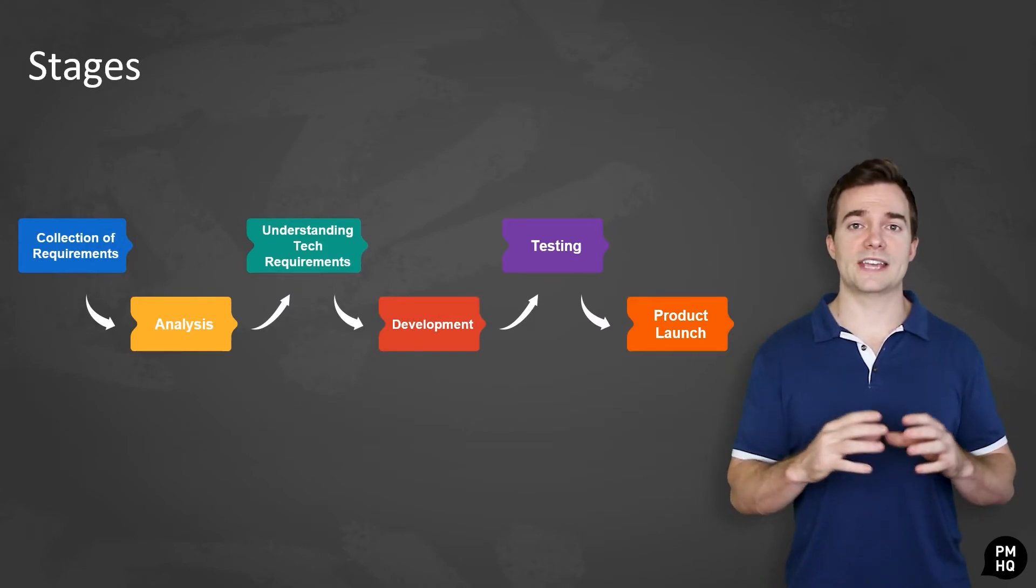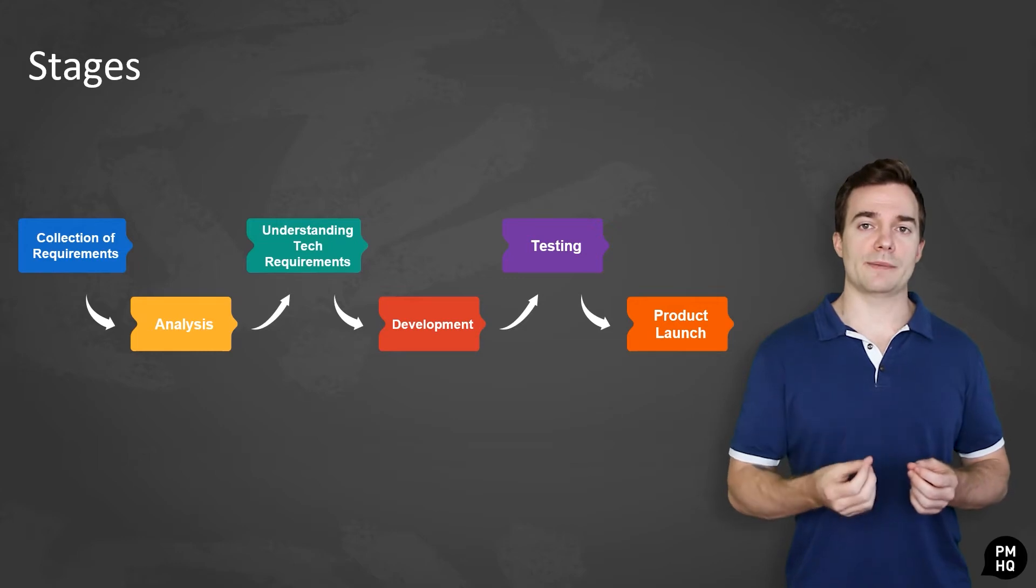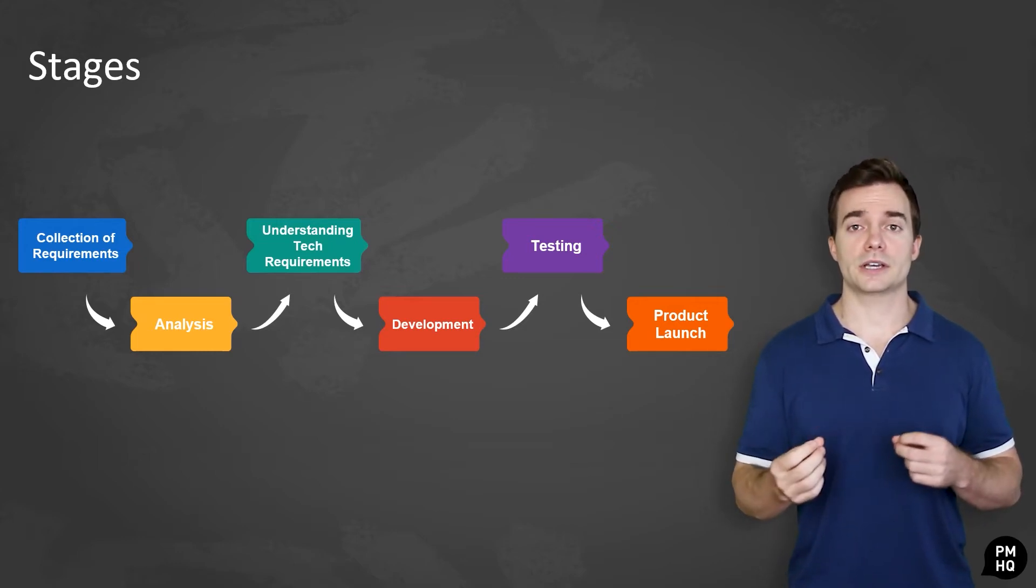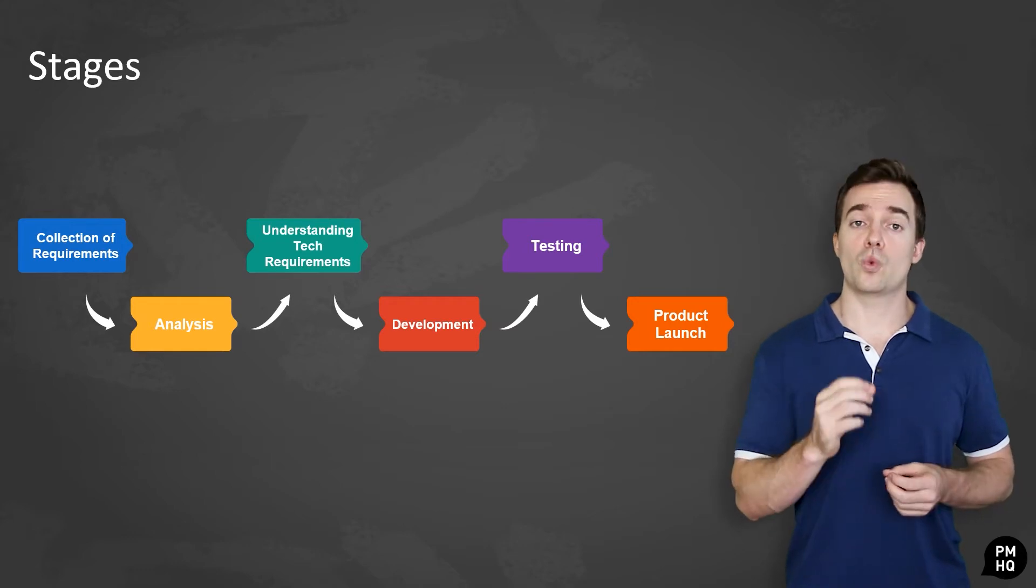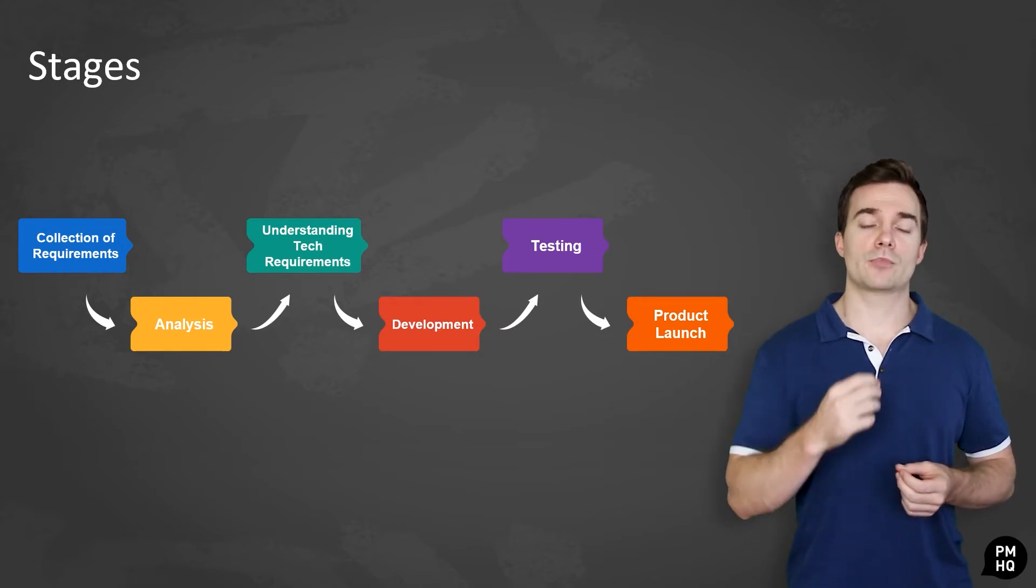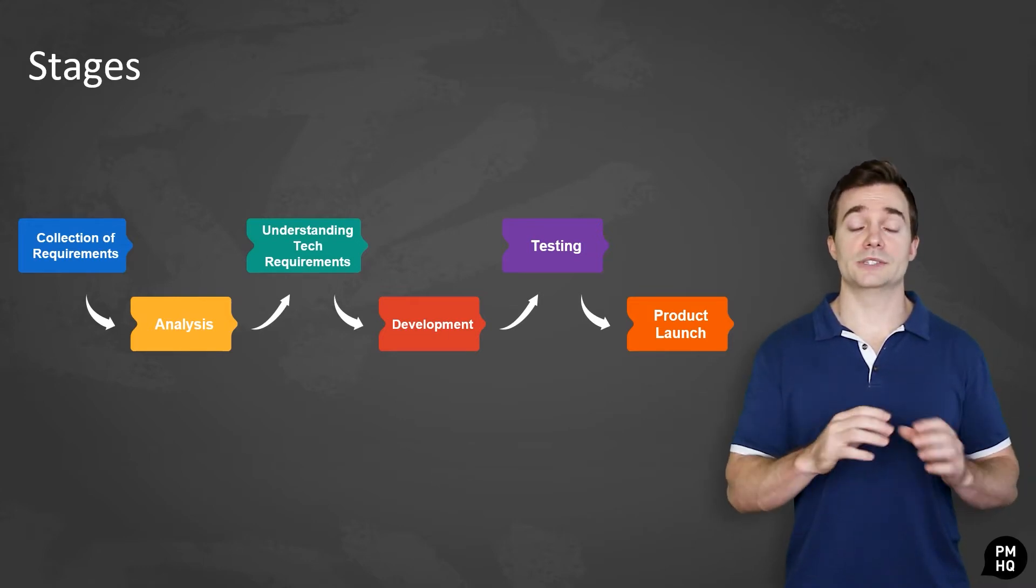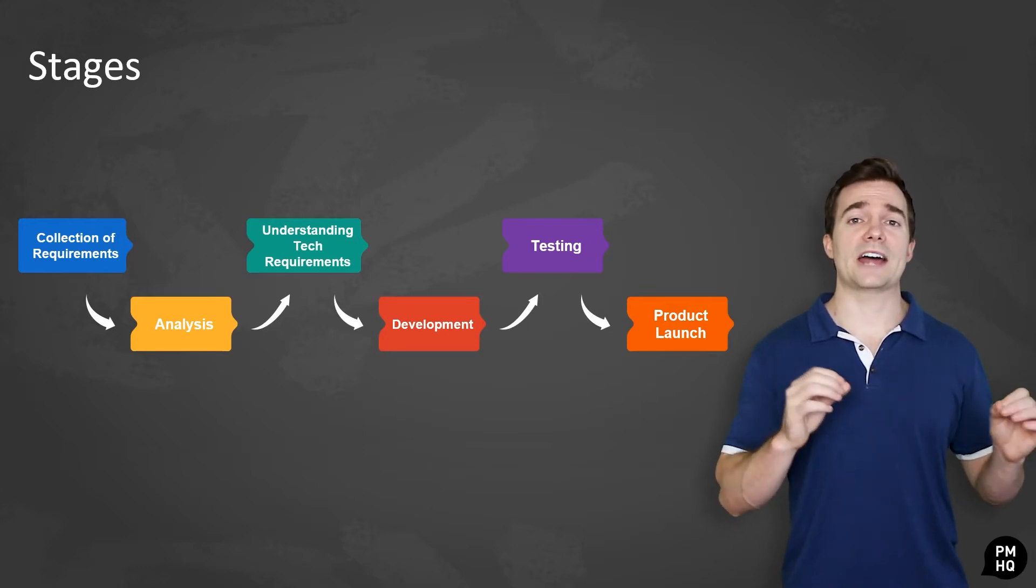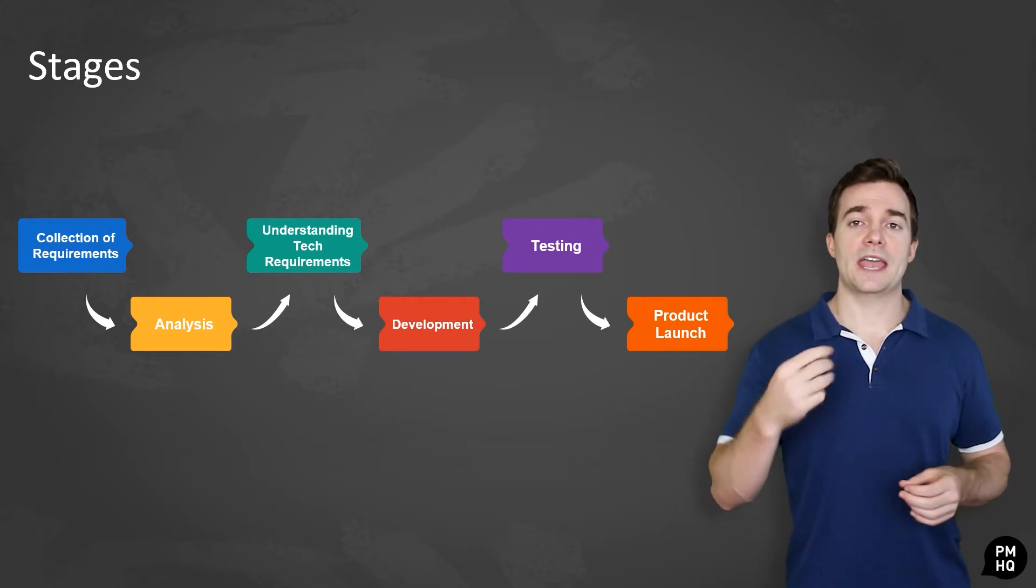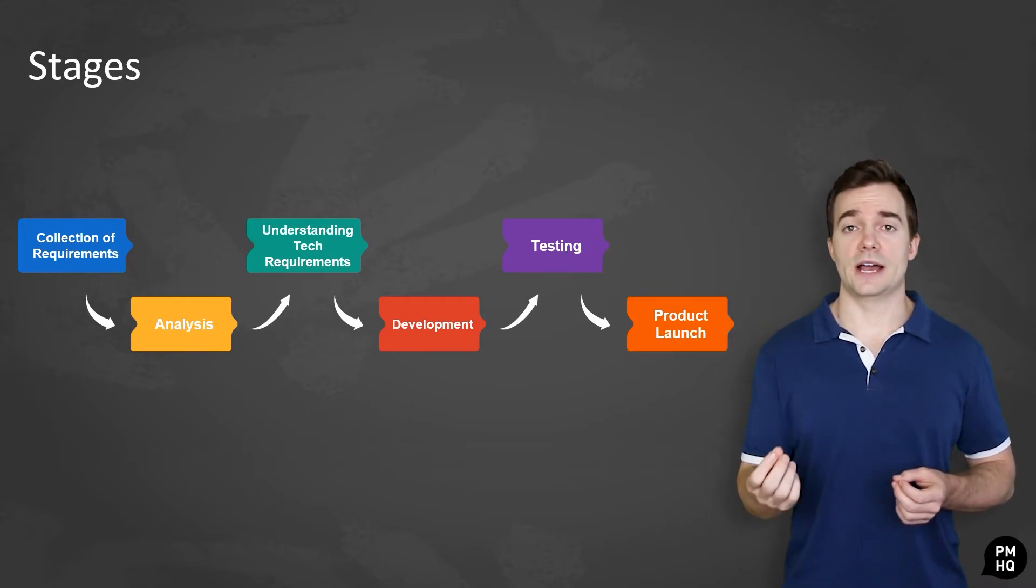In total, there are six steps of the waterfall model. The first one is gathering requirements. During this first phase, the potential requirements of the product are methodically collected and written down in a specification document. With this requirements document, project managers plan out every other phase without further customer correspondence until the product is complete. It is assumed that all the requirement gathering happens at this phase, and the requirements are gathered by the business analyst and analyzed.